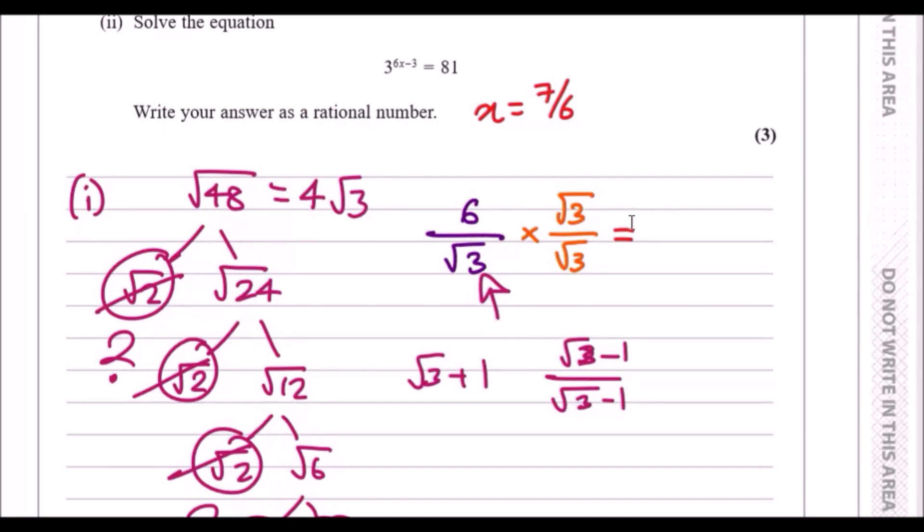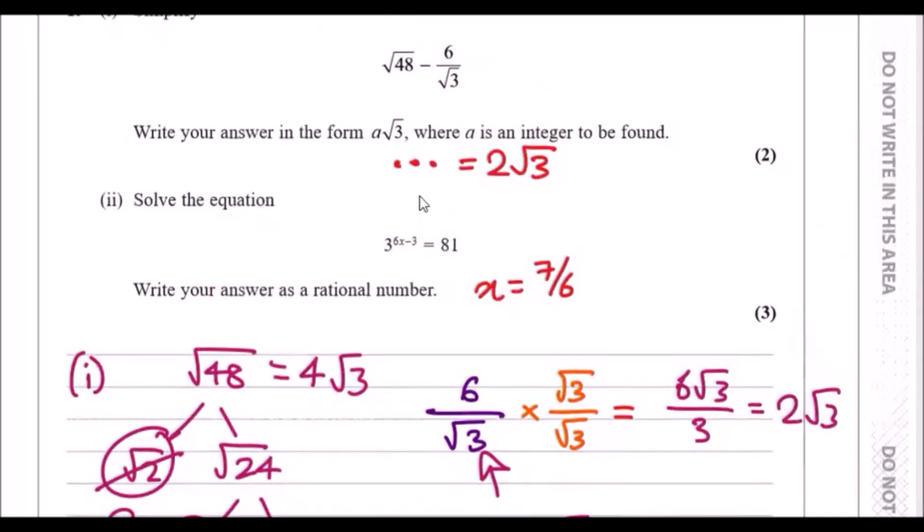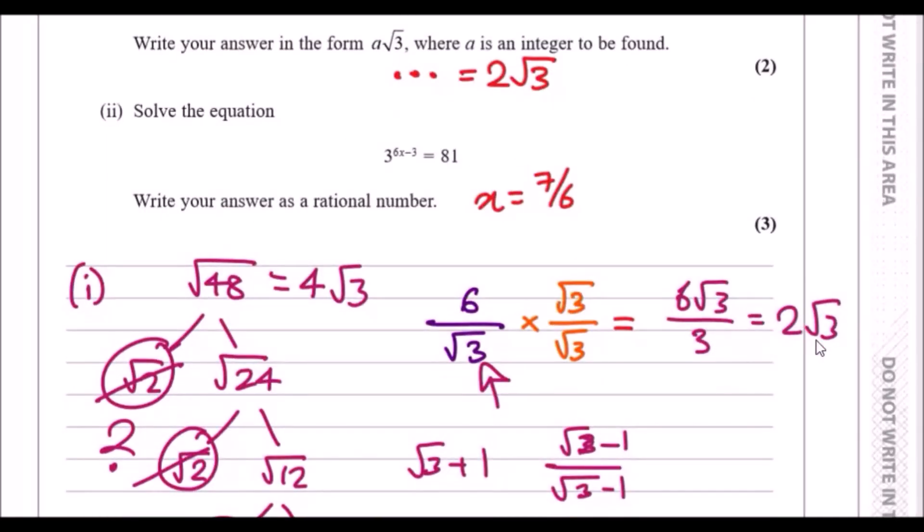For this one, times top and bottom: six times root 3 gives us 6 root 3, and root 3 times root 3 gives us a whole 3 because two similar surds give us a whole. Cancelling down, 6 over 3 is 2, so it's 2 root 3. The final answer is 4 root 3 minus 2 root 3, which gives us 2 root 3. Done.